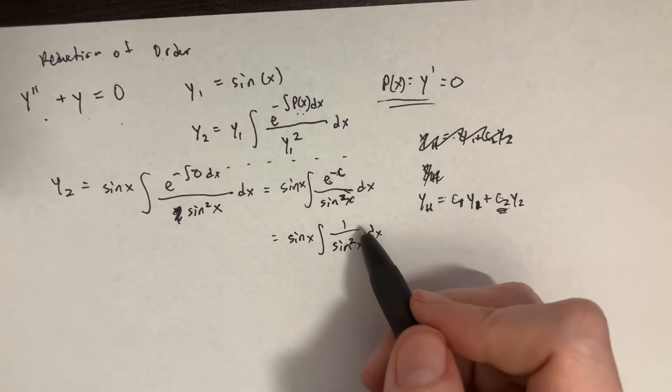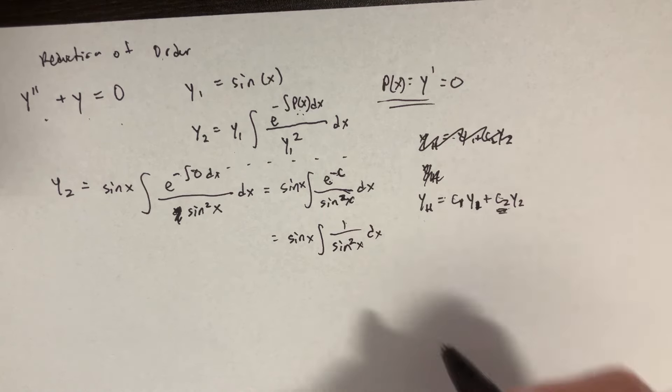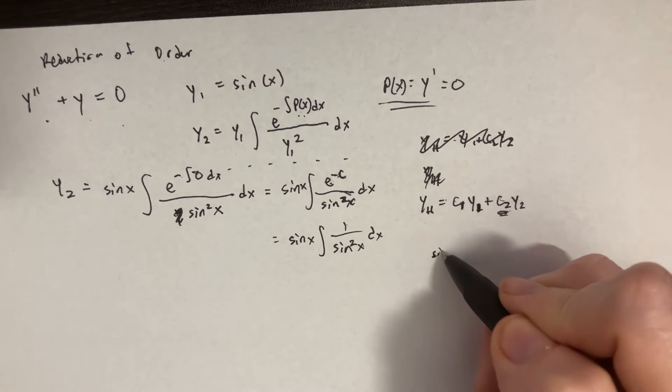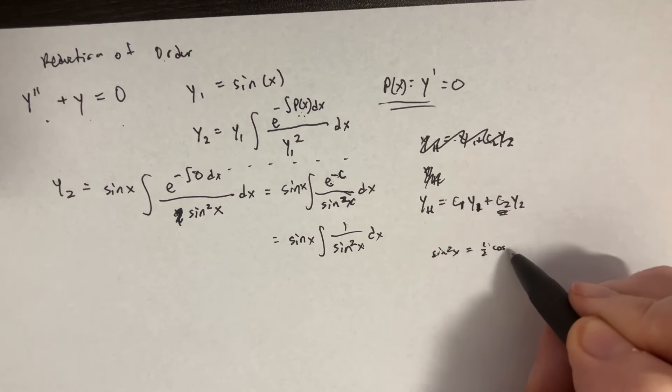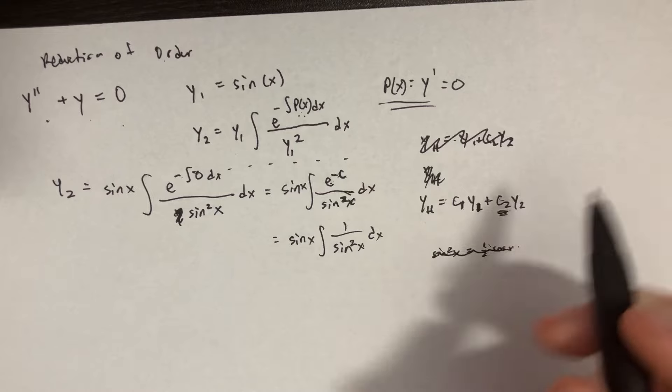Now it turns out that 1 over sine squared of x, you might be tempted to maybe do something with the sine squared of x equals like 1 and a half cosine x or something like that. We don't have to do anything like that.